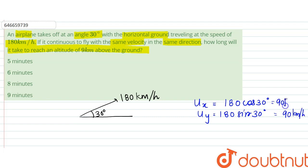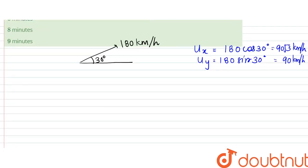And this would be equal to 90 root 3 kilometers per hour. This would be the speeds along x and y direction.